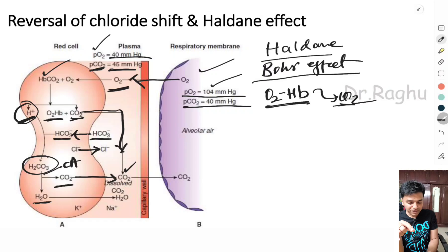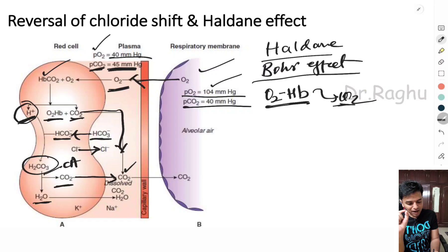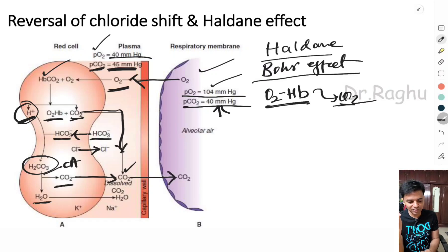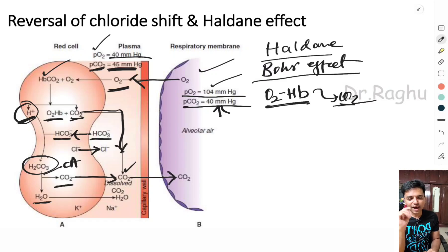The PCO2 in the arterial end of the pulmonary capillaries is 45 mmHg, while alveolar PCO2 is 40 mmHg. Because of this gradient, CO2 diffuses from the capillaries into the alveoli. This is how transportation of carbon dioxide takes place. The important concepts are the chloride shift, the Haldane effect, and the reversal of the chloride shift.